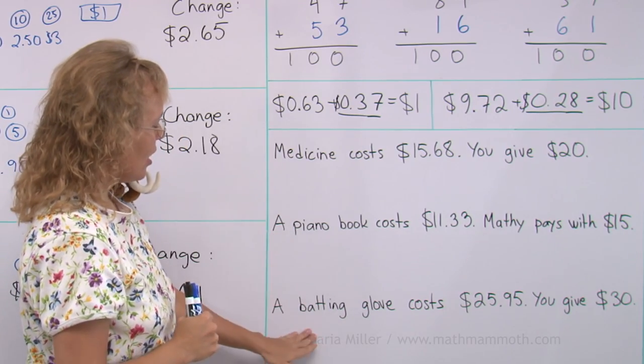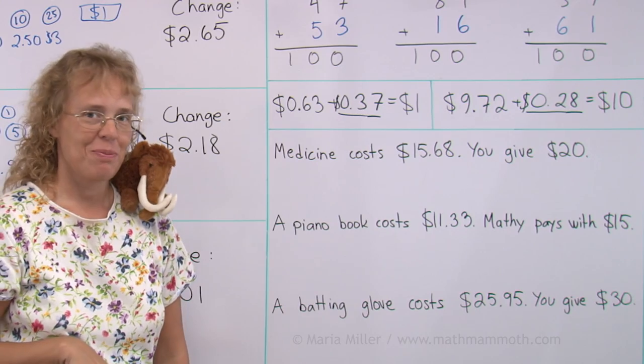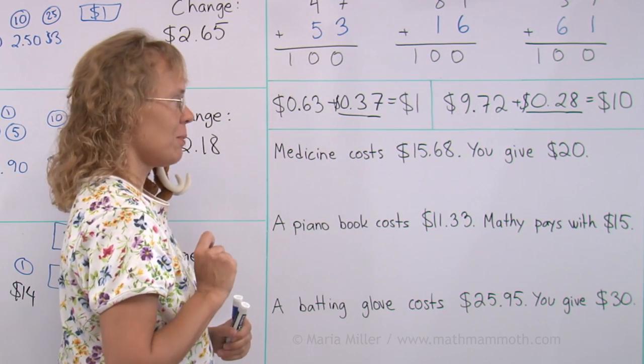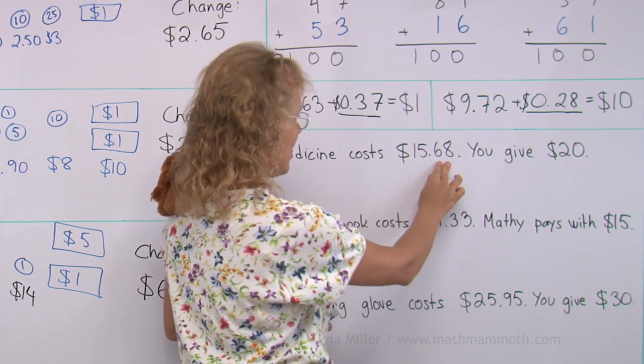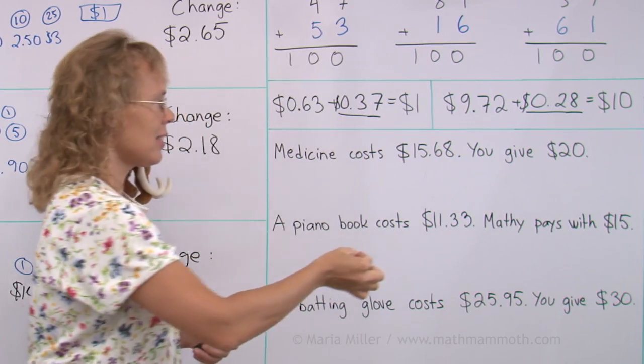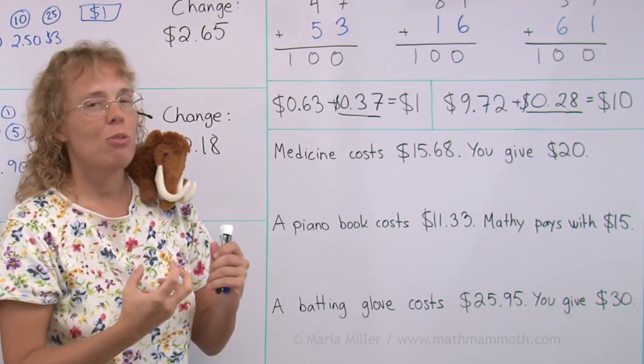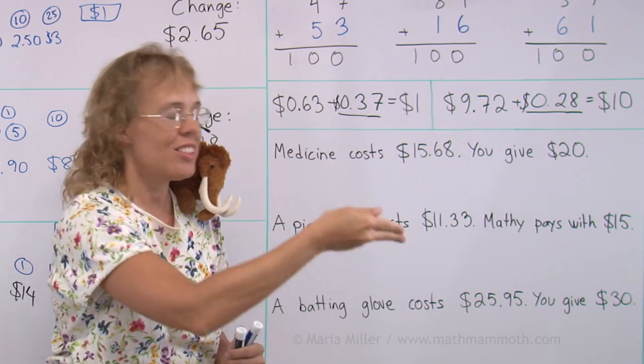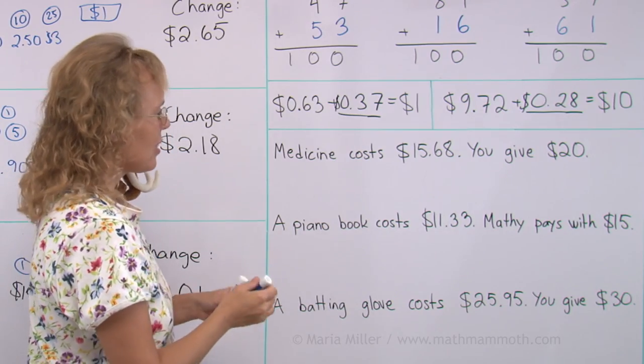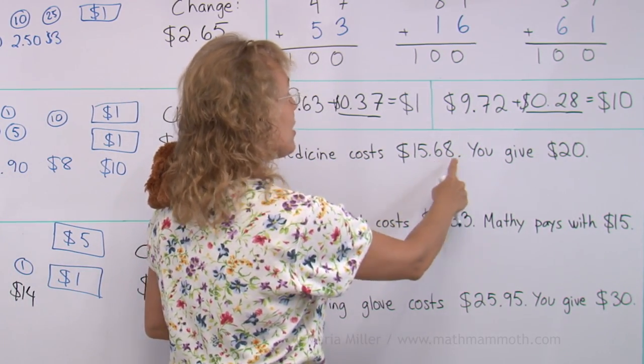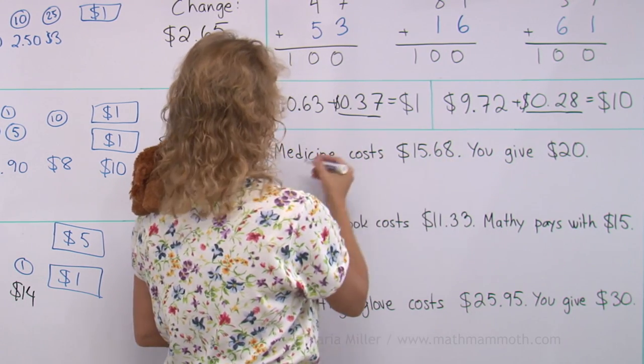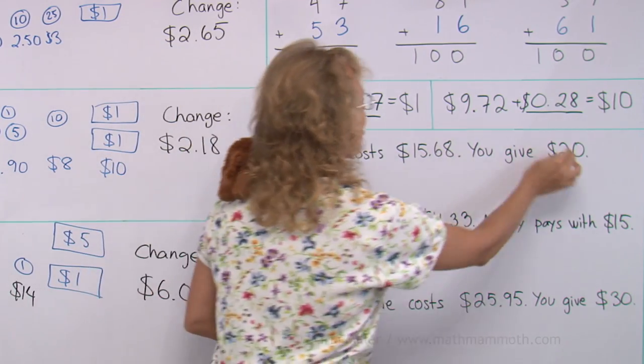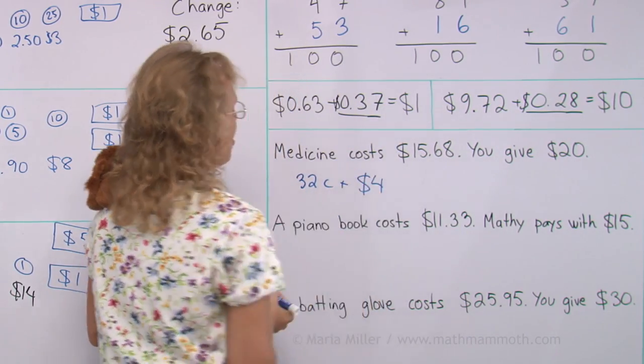And we can use this idea now when we are figuring out the change for these 3 situations. Some medicine here costs $15.68 and you give $20. And I can first think of this 68 cents. 68 cents plus how many cents would give me 100? I'm still thinking of counting up from this number till 20, but I will first count up from the 68 cents till the next whole dollar, till 100 cents. And then I just have the whole dollars to deal with. So thinking of this 68, I would add 32. 3 and 2, so that I would get 9 here and 10 here. So 32 cents. And after that I am at $16. And from $16 to $20 is just $4. So the change is $4.32.